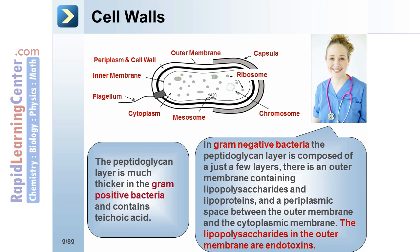The cell wall of both gram-positive and gram-negative bacteria contain many common features, including a cytoplasmic membrane, peptidoglycan, capsule, pilus, and flagellum.